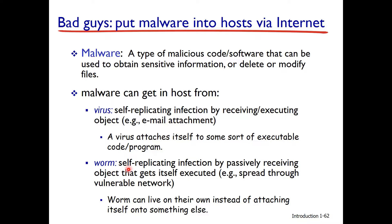A worm is a self-replicating infection that passively receives an object and gets itself executed. Worms can live on their own instead of attaching themselves onto something else. In other words, a worm has the same destructive purpose as a virus, but if it is standalone, it does not need any attachment.